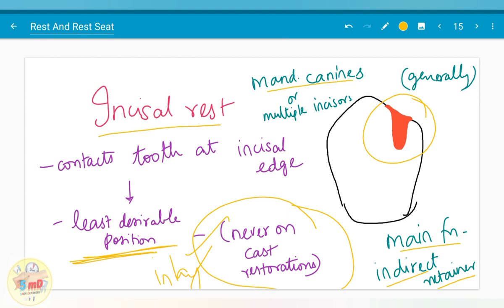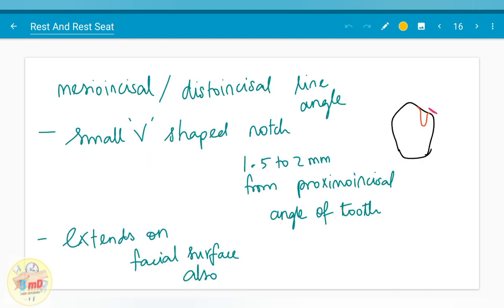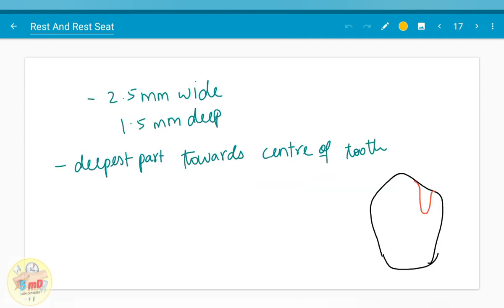It is generally used in mandibular canine. If incisals are considered, multiple rests are advocated. Mesioincisal and distoincisal line angle is the place where it is given. The proximoincisal line angle should be away from 1.5 to 2 mm from the rest seat. Small V-shaped notch is given as you could see here. It extends on the facial surface also. To finish it off, we should know the depth. That is, it should be at least 1.5 mm and 2.5 mm wide.